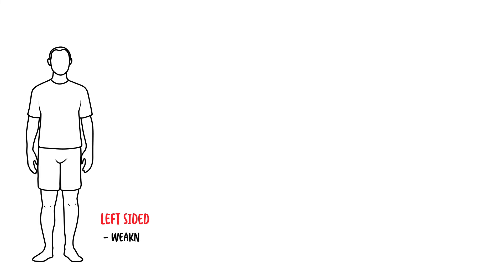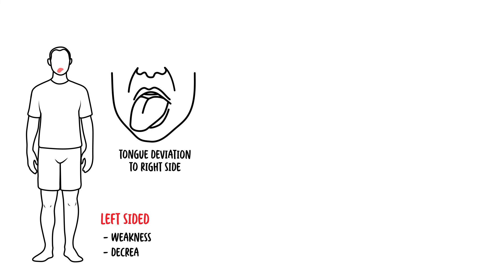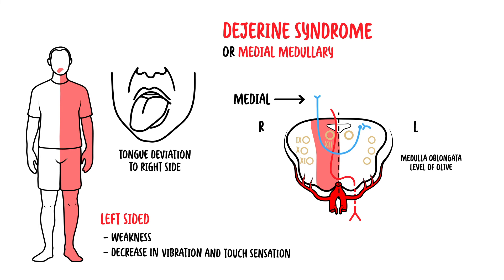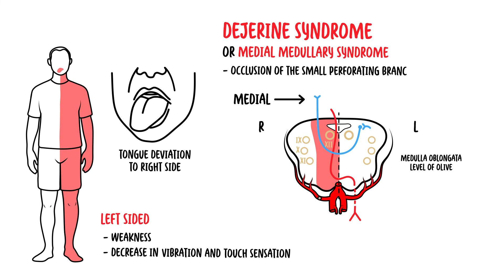The second case is an elderly man presenting with sudden left-sided weakness of his body. On examination, there is tongue deviation to the right side and decreased vibration and fine touch sensation on the left side. These signs are caused by injury to the medial aspect of the medulla, also affecting the hypoglossal nerve and nuclei — cranial nerve 12. This is called Dejerine syndrome, or medial medullary syndrome, caused by occlusion of small perforating branches from the vertebral or proximal basilar arteries, or occlusion of the anterior spinal artery. In this case, the lesion is on the right medial aspect of the medulla.